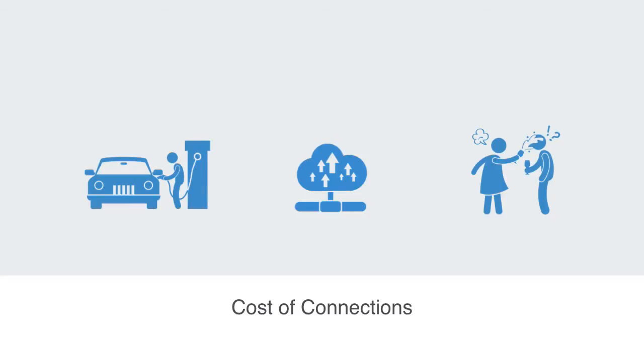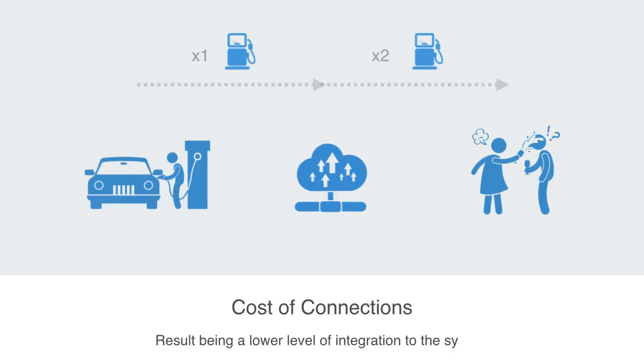The further we have to travel along a network to get from A to B, the more it will cost and less likely it will occur, with the result being the further we have to travel to get from one side of the network to the other, the lower the level of integration to the system is likely to be.